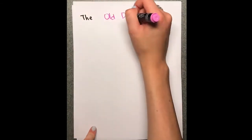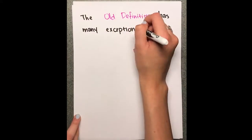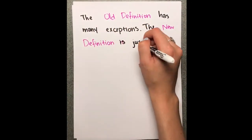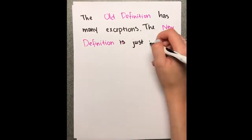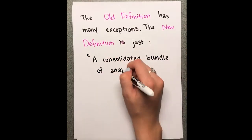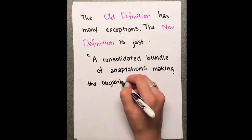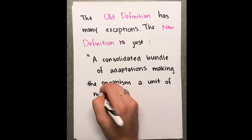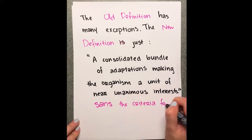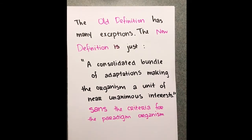Due to the many exceptions to the old definition, a new definition for organism was recently developed. The new definition sticks to just a consolidated bundle of adaptations, making the organism a unit of near-unanimous interest, sans all of the other criteria.